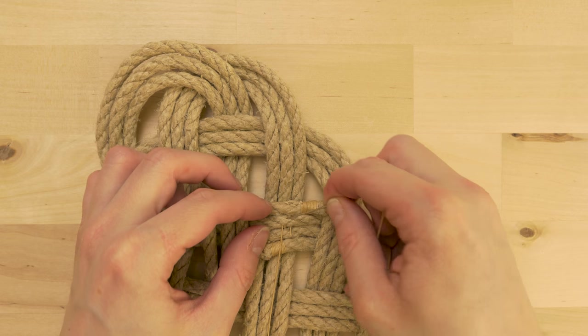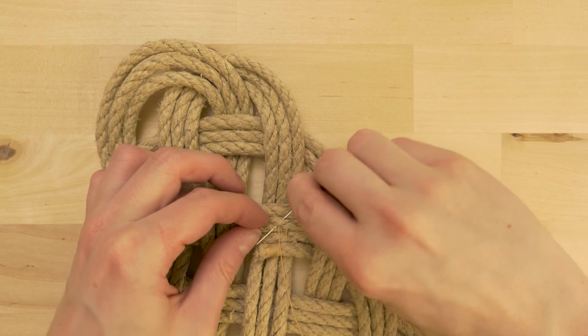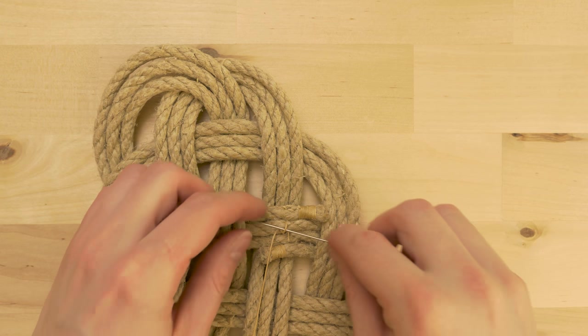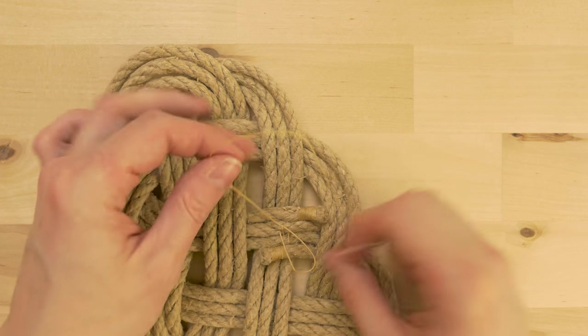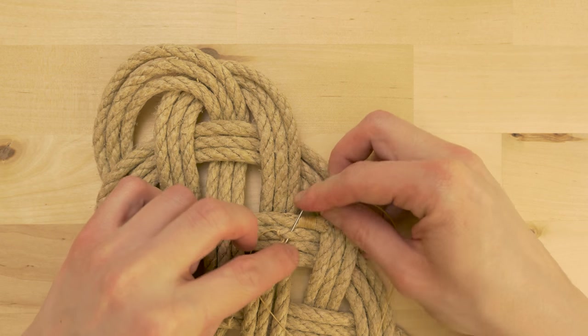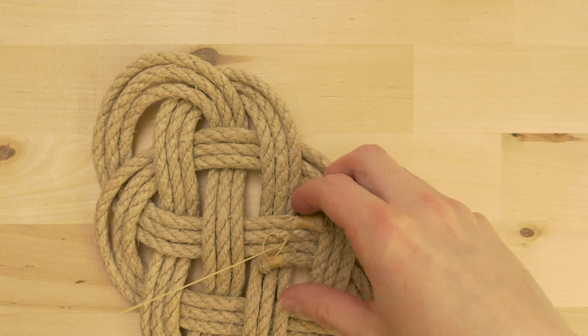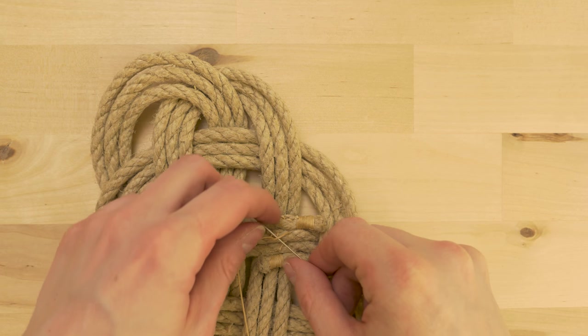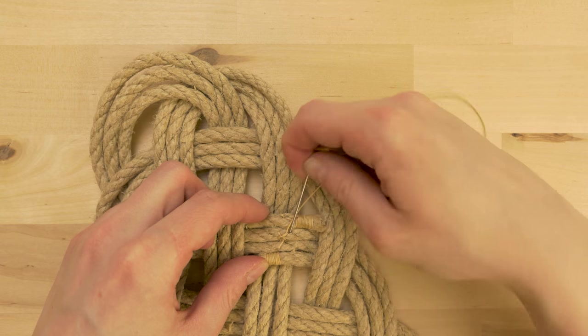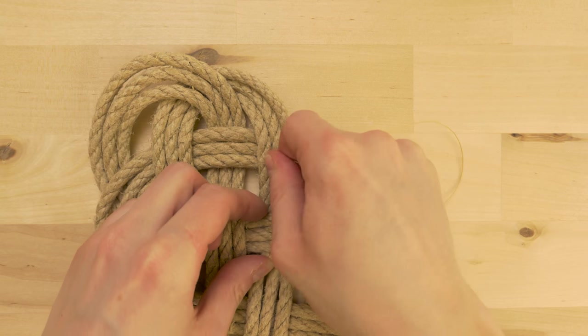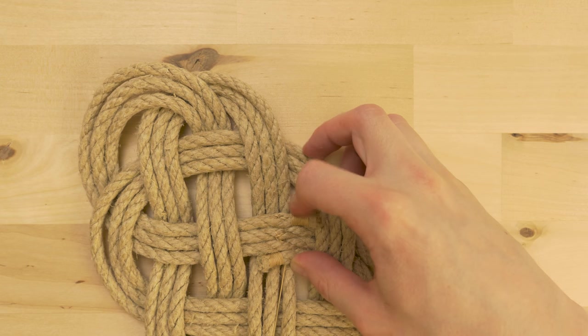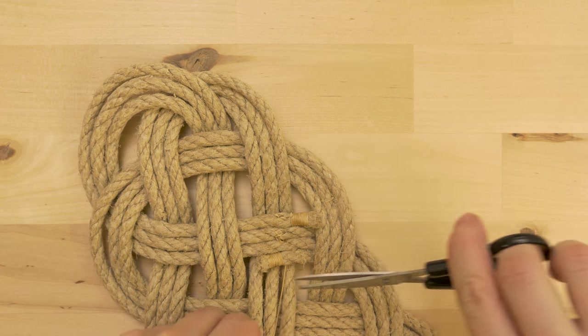Now you can lock off your stitching. I usually tie two knots in order to prevent my thread from slipping out. And then just work in your thread to the other side. So the bottom. And snip it.